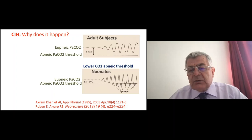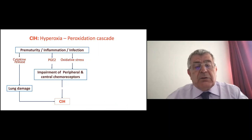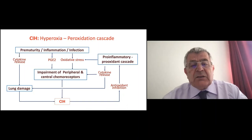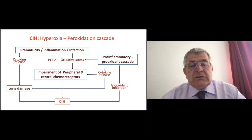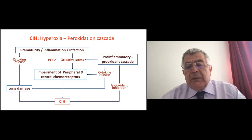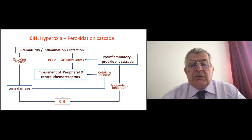The third theory is the pro-inflammatory cascade. Prematurity and inflammation — prematurity often comes with infection — damage the lung in addition to the harm from our ventilation. This further impairs both peripheral and central chemoreceptors. Both factors cause intermittent hypoxia. The hypoxia itself then opens a pro-inflammatory, pro-oxidant cascade, increasing cytokines and oxidative stress. This becomes a closed circuit: the cause becomes the effect and the effect becomes the cause.